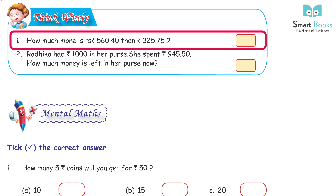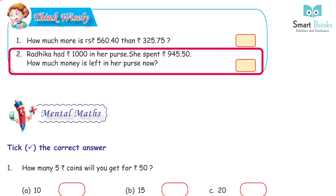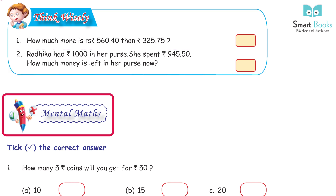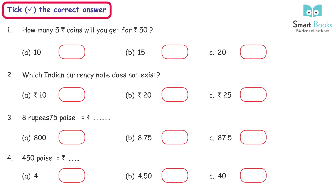Think wisely! 1. How much more is Rs. 560.40 than Rs. 325.75? Answer: Rs. 234.65. 2. Radhika had Rs. 1000 in her purse. She spent Rs. 945.50. How much money is left in her purse now? Answer: Rs. 54.50.